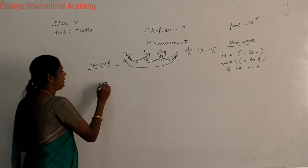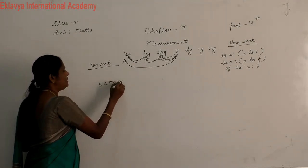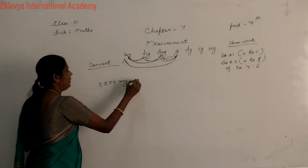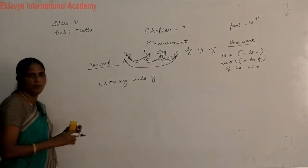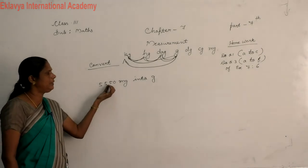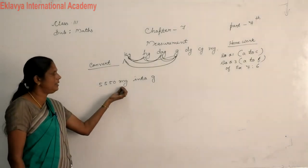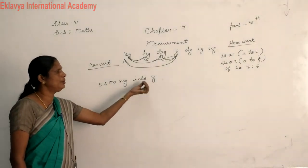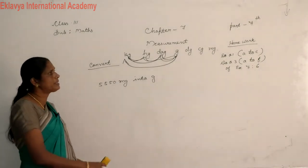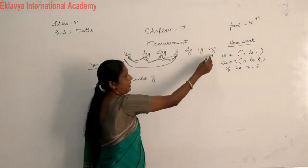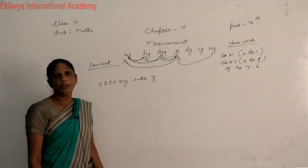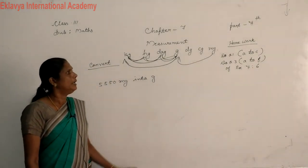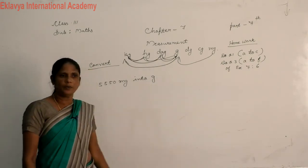5,550 mg into gram. Where is our mg? Here. Mg into gram. What do you do?